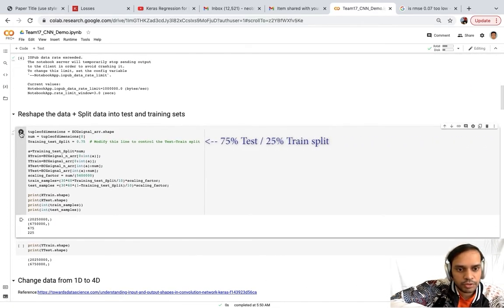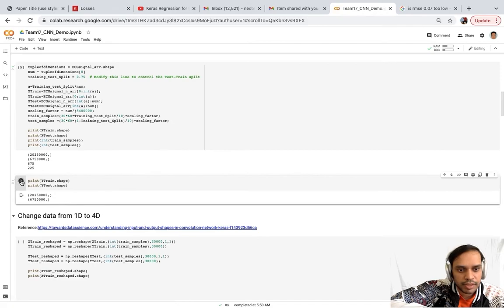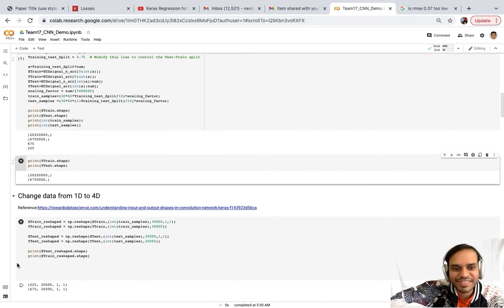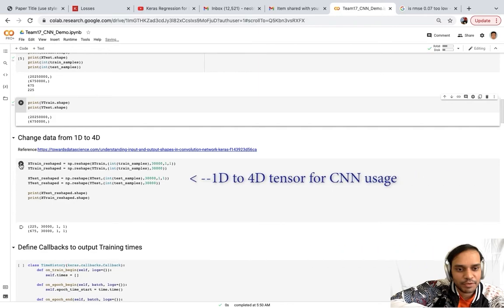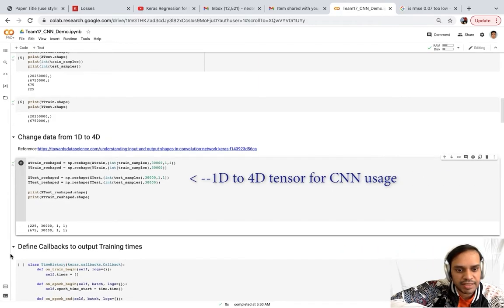The next section of code is used to split the data into 75% test and 25% for training. The next section of code is used to transform the data from 1D to 4D to be used inside the CNN.